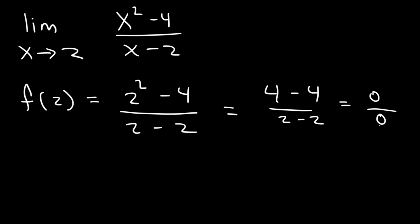0 over 0 is indeterminate — it could be 0, it could be infinity, it could be undefined. We don't know. So the function is not defined at x equals 2; when x is 2 we don't have a specific value. However, as x approaches 2, it does converge to a specific value. Let me explain.